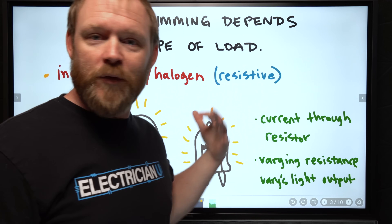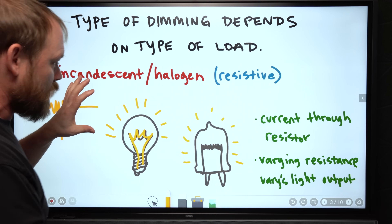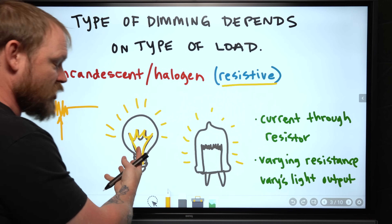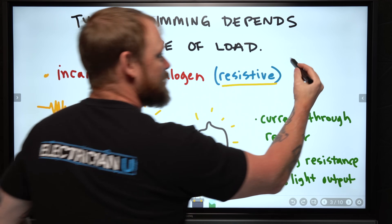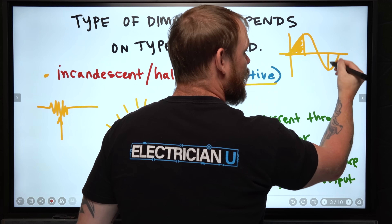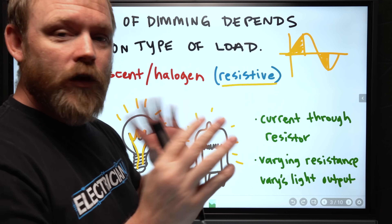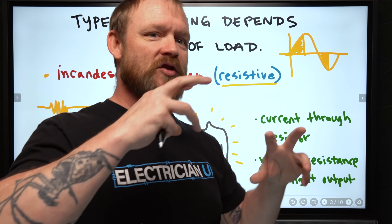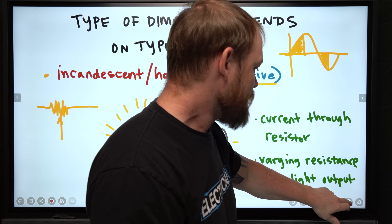The problem is that resistive dimming doesn't work with everything - it doesn't work with LED, HID, or ballasted lighting. For purely resistive light, we just vary the resistance. But we can also electronically control this using phase cutting, where we take a sine wave and cut half of it out - cutting the leading edge and only using the reverse part. If we're cutting a portion of the phase, less power gets delivered to the load. That's why LEDs have forward phase and reverse phase.